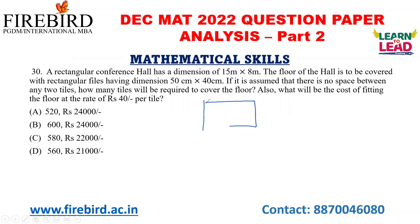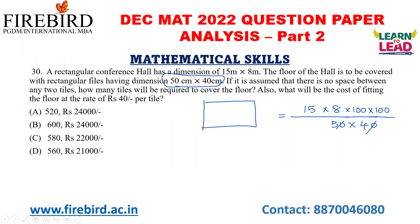A rectangular conference hall has dimensions 15 meters by 8 meters. The tiles are measured in centimeters. Converting the hall dimensions: 1500 cm by 800 cm. If the tile dimensions are 50 cm by 40 cm, then the number of tiles needed is (1500 by 800) divided by (50 by 40), which equals 600 tiles. The cost per tile is Rs. 40, so 600 into 40 equals Rs. 24,000 as your answer.